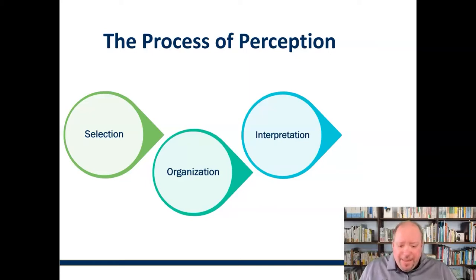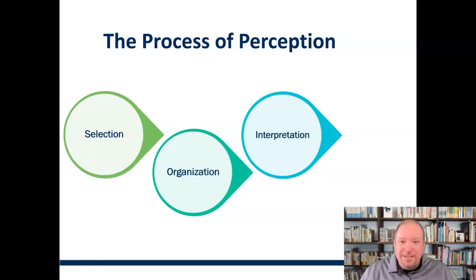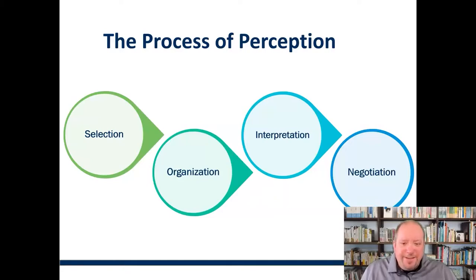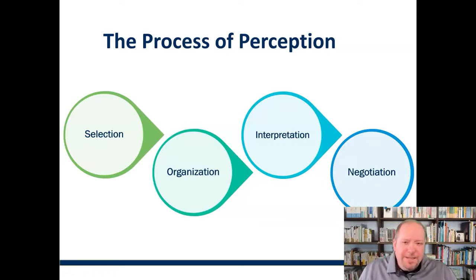Interpretation is also part of selection: how do we make sense of things given our frame of reference — our culture, background, values, knowledge, history? Interpretation plays a major factor. Then in many instances we get into negotiation, where we're negotiating the reality and perception of things with other people. We're going to focus on the first three stages here: selection, organization, and interpretation. But first, I'd like to ask you to do a little activity.